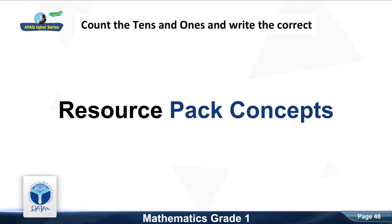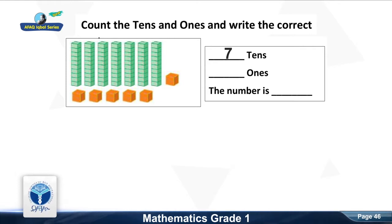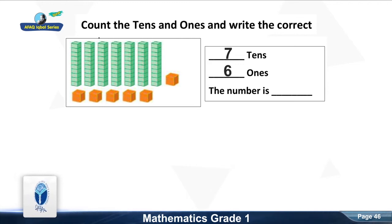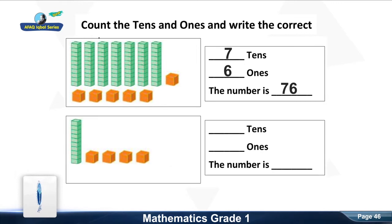Now we move to the next resource pack concept. Count the tens and ones and write the correct number. First question: count the tens. Good, it is 7 tens. Now count the ones. Good, it is 6 ones. The number is 76.